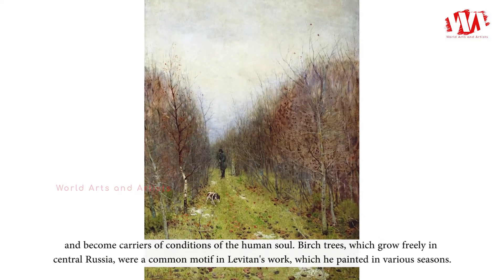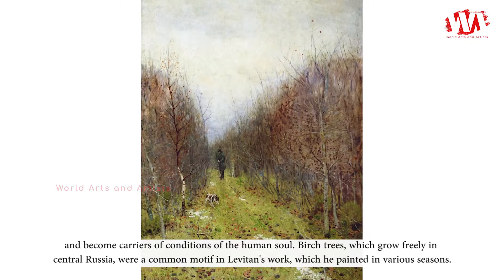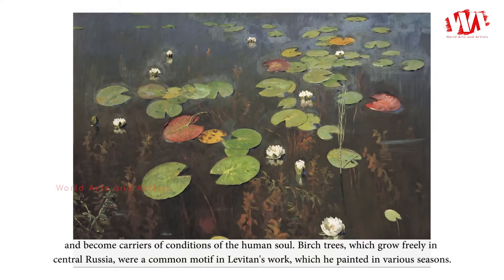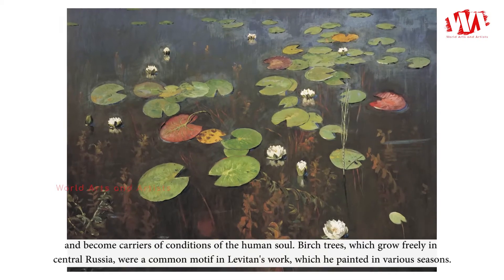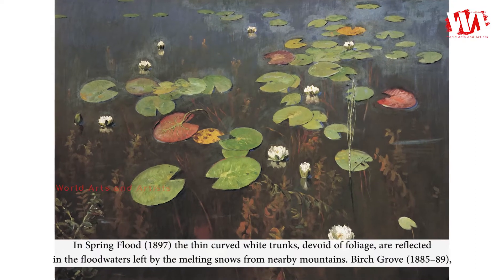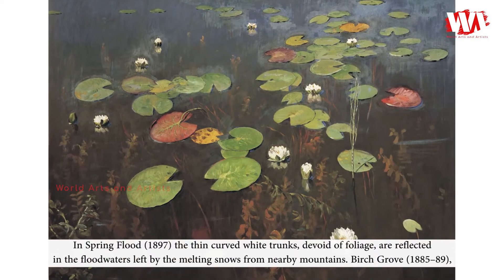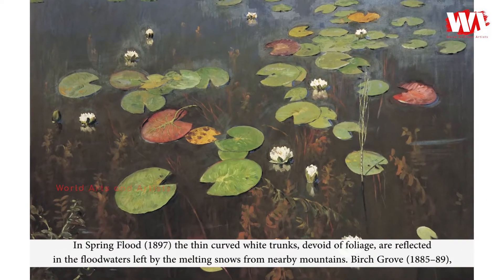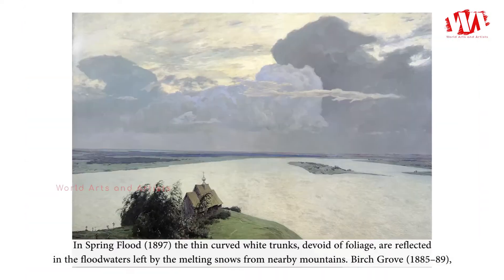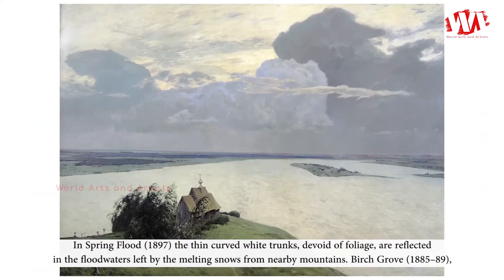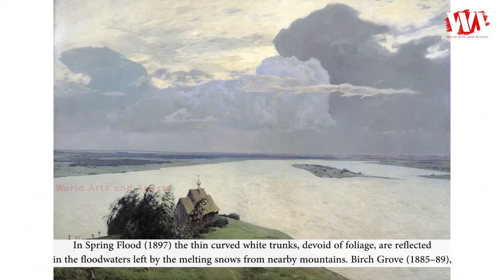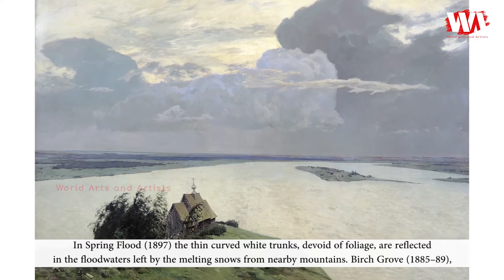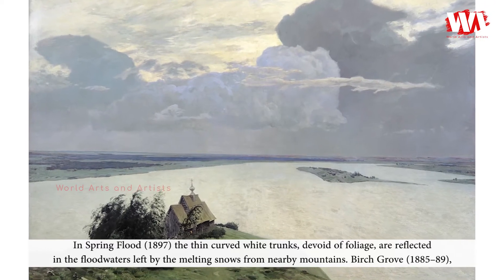Birch trees, which grow freely in central Russia, were a common motif in Levitan's work, which he painted in various seasons. In Spring Flood (1897), the thin curved white trunks, devoid of foliage, are reflected in the floodwaters left by the melting snows from nearby mountains.